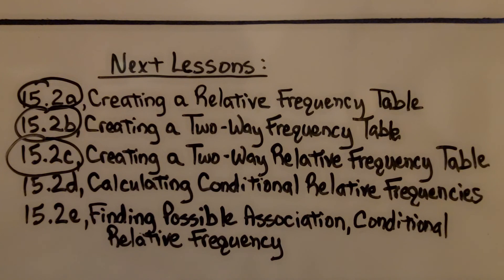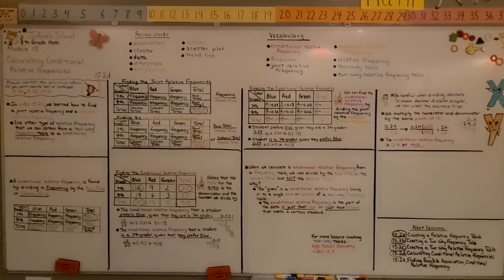You can also take a look at it if you're just curious what a high school geometry lesson would look like. We're finished with 15.2 D and we're moving on to the very last lesson of 8th grade math. And we're going to be finding possible association, conditional relative frequency.